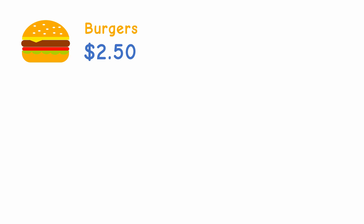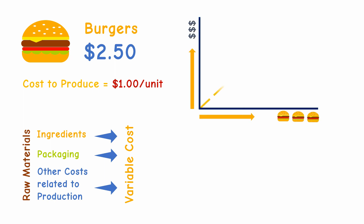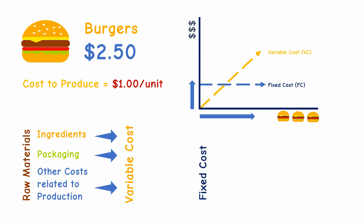Say you're selling burgers at two dollars and fifty cents. The cost to produce one burger is one dollar. This includes the cost of raw materials such as the ingredients in making the burger, the packaging, and other costs related to production. These costs are variable costs, as they change depending on the level of production — the more products you produce, the more variable costs you incur. Then there are fixed costs, which remain constant regardless of how much you produce or sell, such as your rent expense and the salaries of your workers.